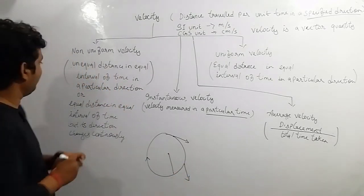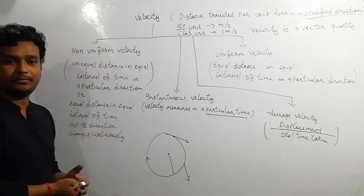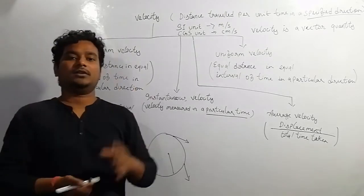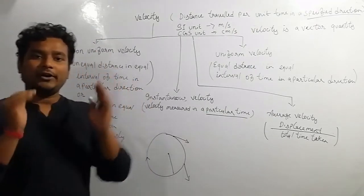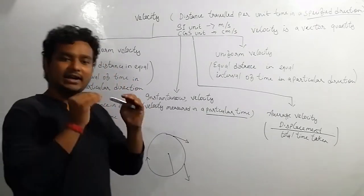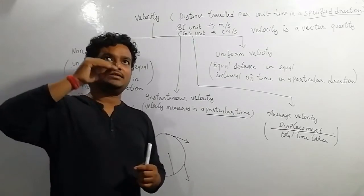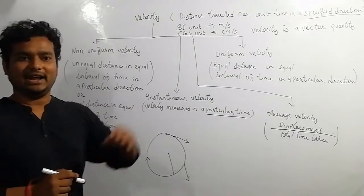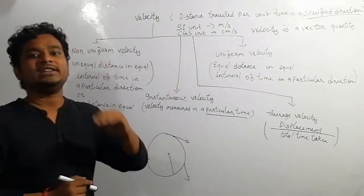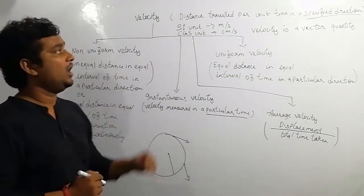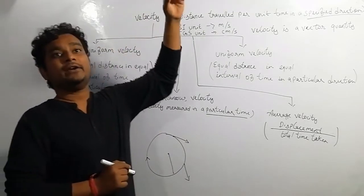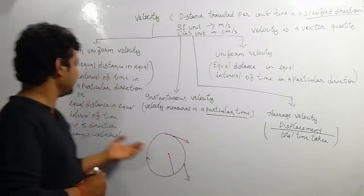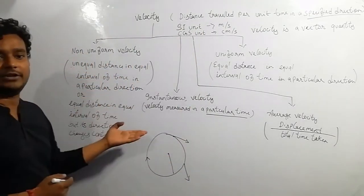Another example of non-uniform velocity: when we throw a ball towards the sky, the ball's speed slowly decreases every second. It reaches the maximum height where its velocity becomes zero, and after that it starts falling down. This is also an example of non-uniform velocity.